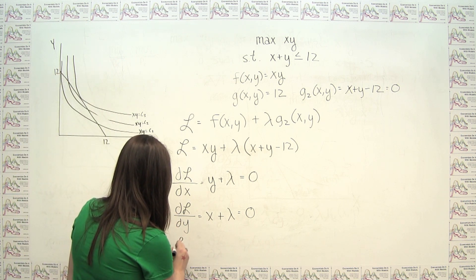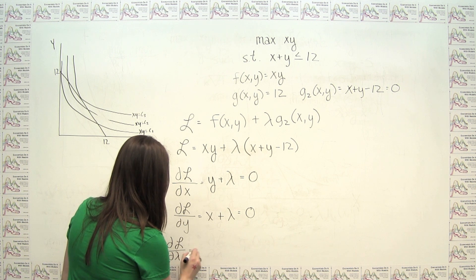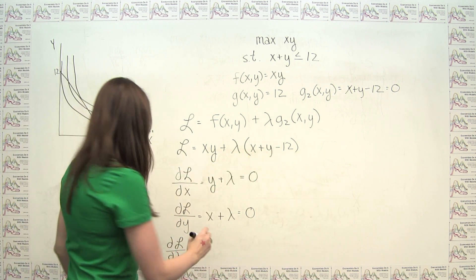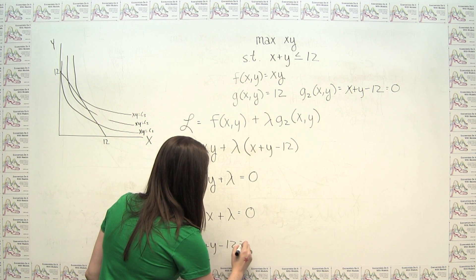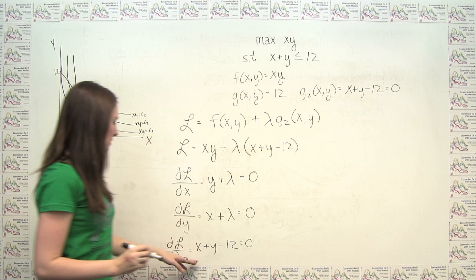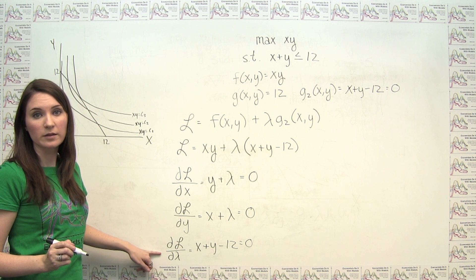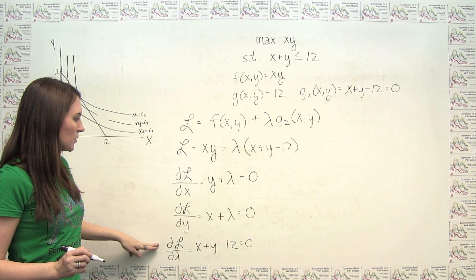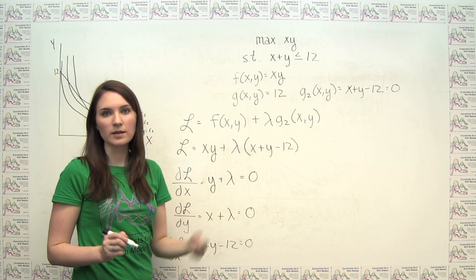Finally, we take the partial of L with respect to lambda, and we notice that that's just x plus y minus 12, and that also has to equal zero. And we notice that this last guy here is just the constraint that we originally started with. So the next step is to go through these three equations and solve for x, y, and lambda.